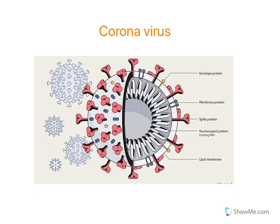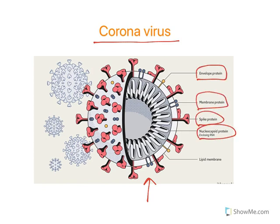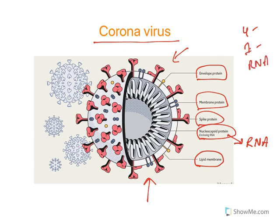Let us see the anatomy of coronavirus. A single coronavirus particle has four important proteins: envelope protein, membrane protein, spike protein, and nucleocapsid protein — all present on the surface. Underneath there is a lipid membrane, and the nucleocapsid protein covers the genetic material, which is RNA. So it has four proteins, a lipid membrane, and RNA.